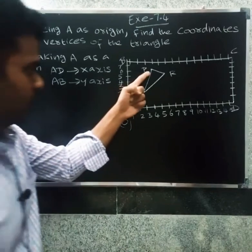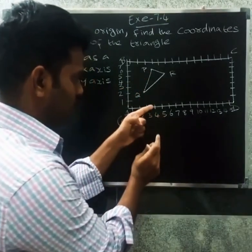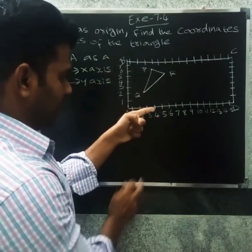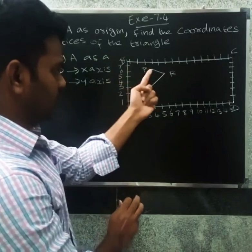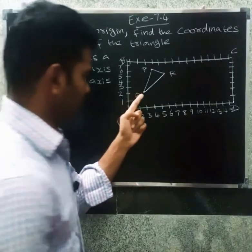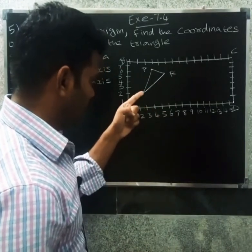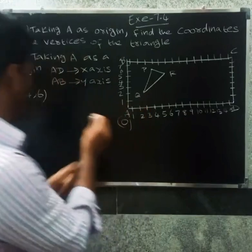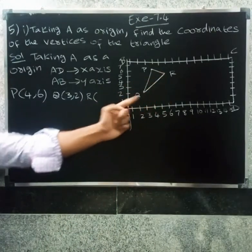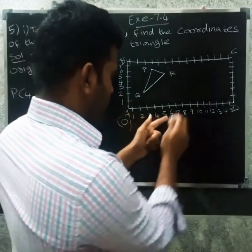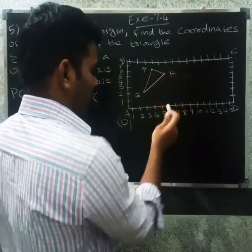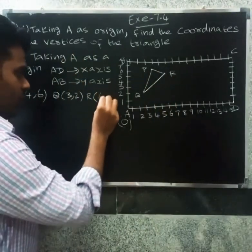Now, looking at the points: one, two, three, four — P is a point. Going straight along the x-axis, that is four straight, and on the y-axis, six straight. So point P is at (4, 6). Next, Q is a point — three along the x-axis and two along the y-axis, so Q is at (3, 2).